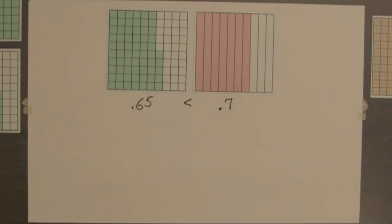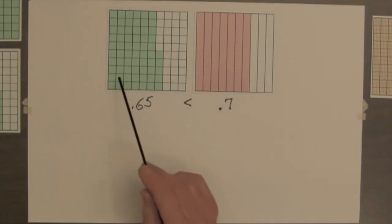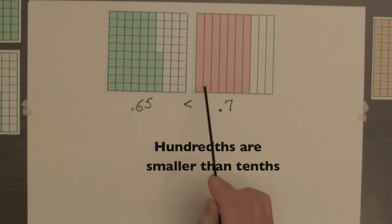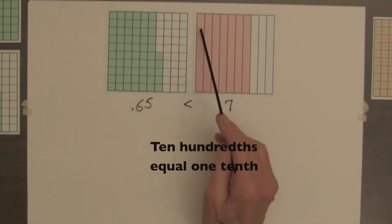Now how can sixty-five of anything be smaller than seven things? Well these sixty-five parts are hundreds and they are smaller. In fact it takes ten hundreds to equal one tenth.